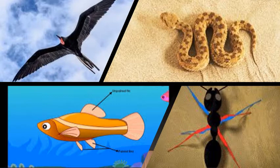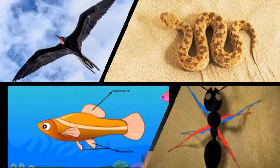What about insects? They creep — C-R-E-E-P — using their legs — L-E-G-S. Fish use their fins — F-I-N-S — and they swim. So walk, run, fly, jump, creep, crawl, slither, and swim — these are a few of the ways in which animals move from one place to another.